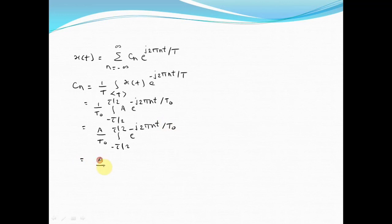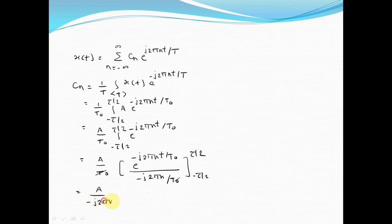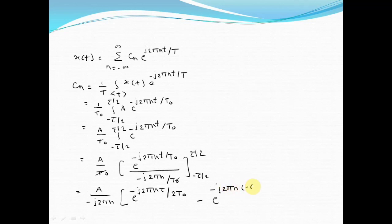Now let us evaluate the integration. A divided by T0, the integral of e raised to minus j2πnt by T0 equals e raised to minus j2πnt by T0 divided by minus j2πn divided by T0, with limits from minus tau by 2 to plus tau by 2. The T0 terms cancel, leaving A divided by minus j2πn in brackets. Substituting the limits gives e raised to minus j2πn tau divided by 2T0, minus e raised to minus j2πn times minus tau divided by 2T0.